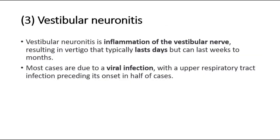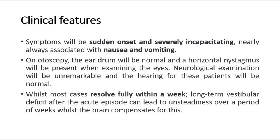Lastly, vestibular neuronitis. This is inflammation of the vestibular nerve, resulting in vertigo that typically lasts days but can last weeks to months. Most cases are due to a viral infection, with an upper respiratory tract infection preceding its onset in half of cases. Symptoms will be sudden onset and severely incapacitating, nearly always associated with nausea and vomiting. On otoscopy, the eardrum will be normal and a horizontal nystagmus will be present when examining the eyes. Neurological examination will be unremarkable and hearing will be normal. Whilst most cases resolve fully within a week, long-term vestibular deficit after the acute episode can lead to unsteadiness over a period of weeks whilst the brain compensates.